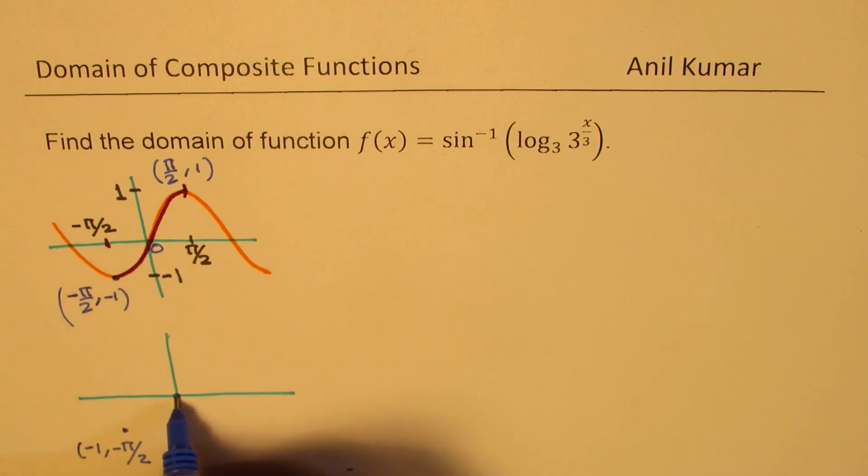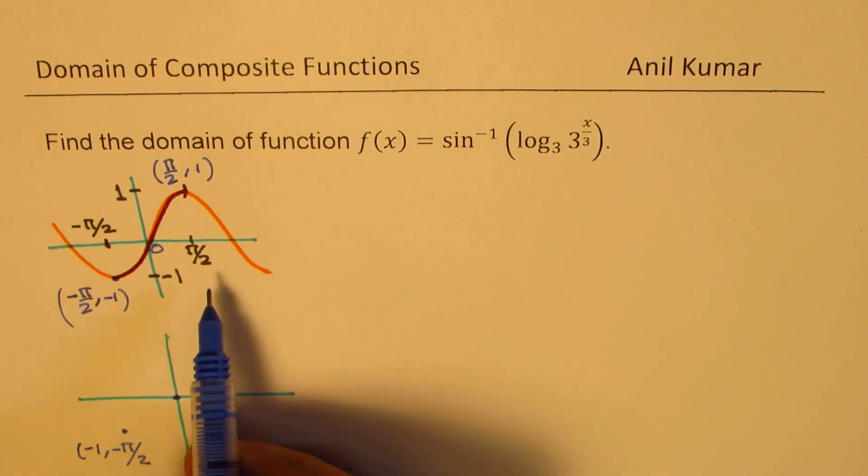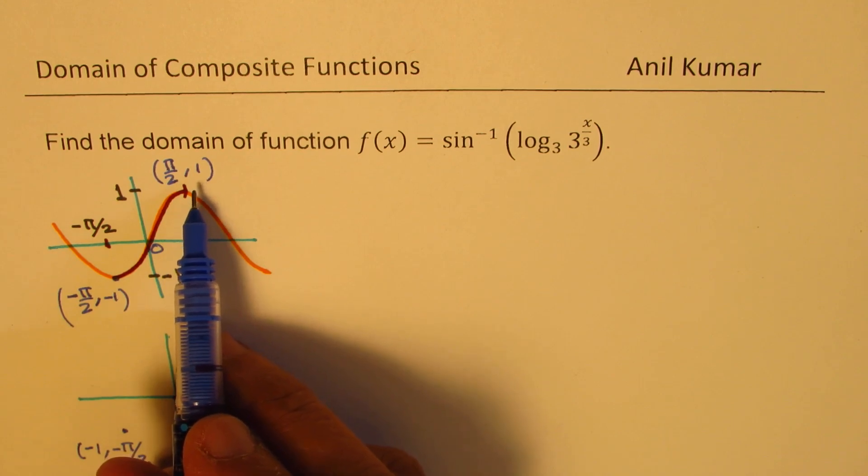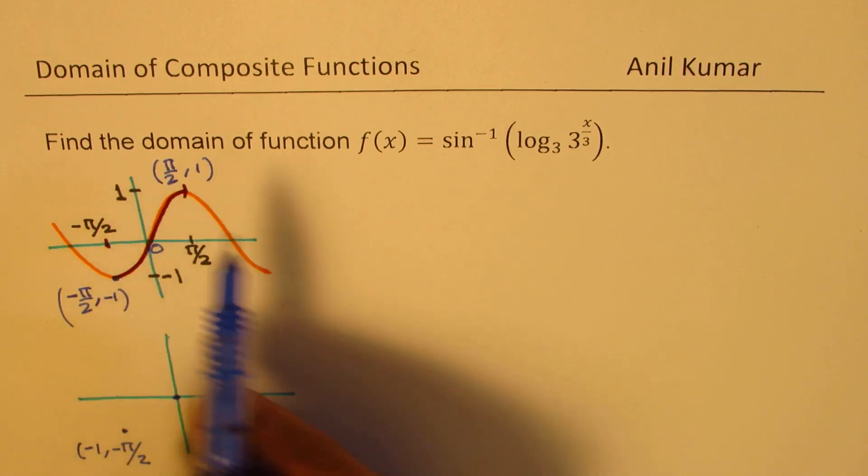Inverse 0, 0, 0 remains the same and then for this particular point which is pi by 2, 1, it becomes 1 pi by 2.